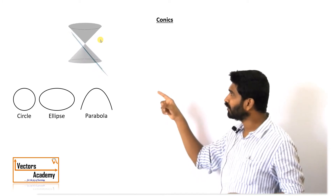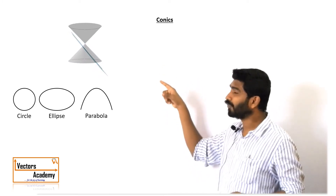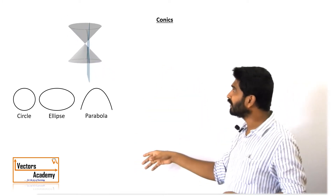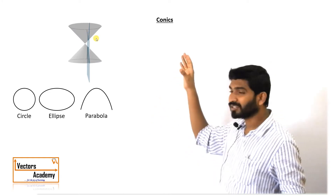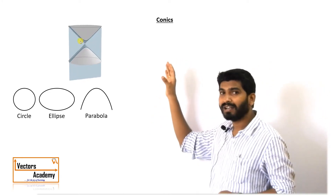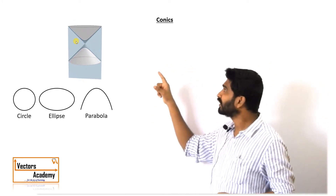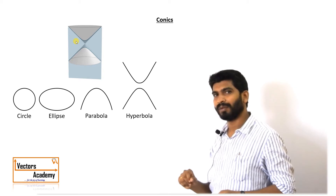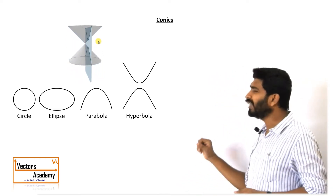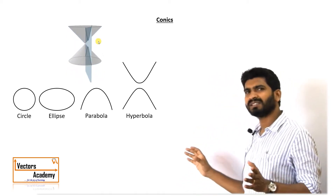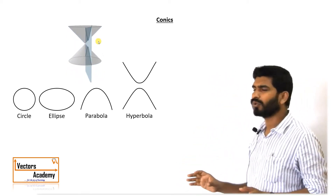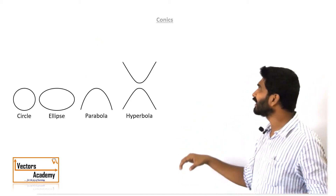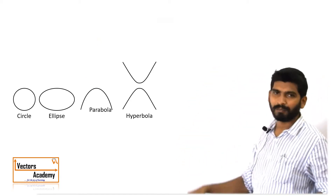And if we cut a bifocal cone with a plane which is parallel to the axis of the cone, then the shape we get is a hyperbola. So today we will be studying just one of the conic shapes, that is the parabola.